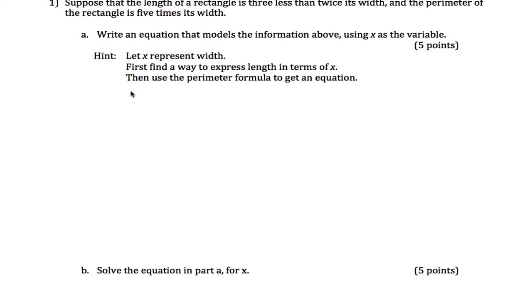It gives us some steps here. It says let width be equal to x, and then find a way to express length in terms of x. We can do that using the sentence up here. It says the length of a rectangle is 3 less than twice its width. So length equals 3 less than twice its width. 3 less than means subtract 3, twice its width, but I know width is x, so I can say length equals 2x minus 3.